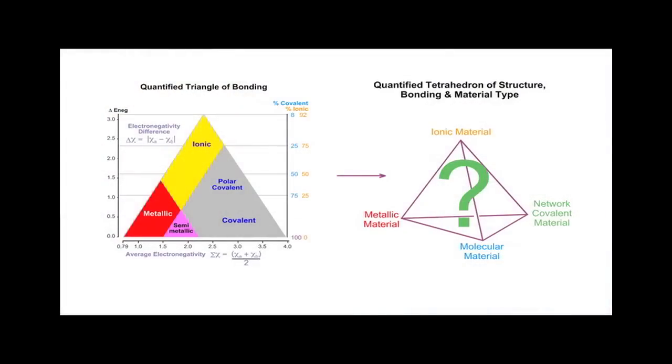Right, so the question is, is it possible to add Jensen's quantification of the Van Arkel-Ketelaar triangle to the Lang tetrahedron? Is it possible to make a quantified tetrahedron of structure, bonding, and material type?